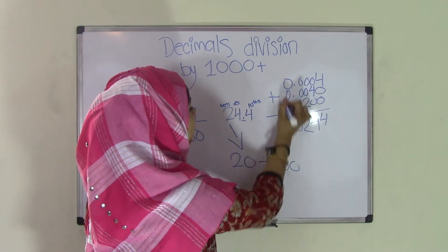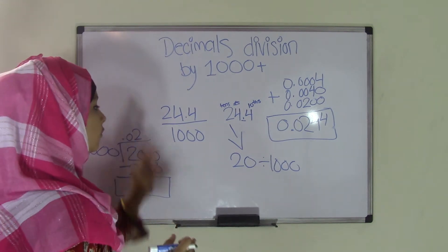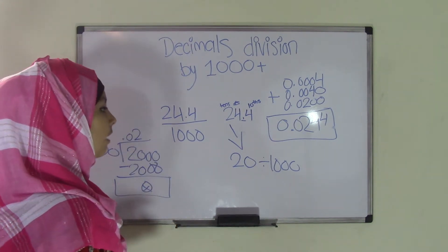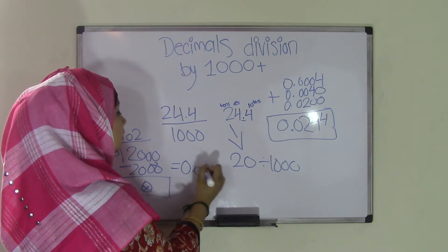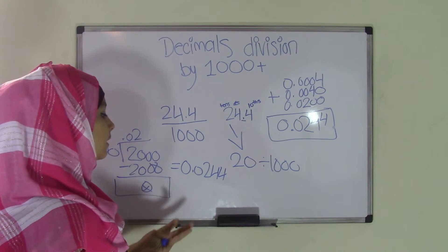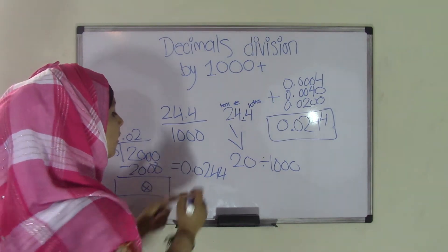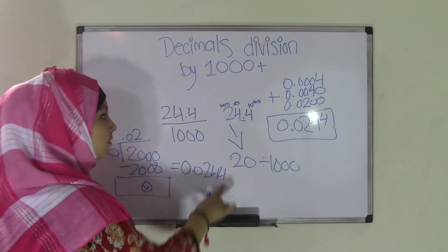Bring down the decimal point and bring down these 0s. That means the final quotient of 24.4 divided by 1,000 equals 0.0244. So this 2 would become now in the hundredths, this 4 will be in the thousandths, and the 4 will be the ten thousandths.